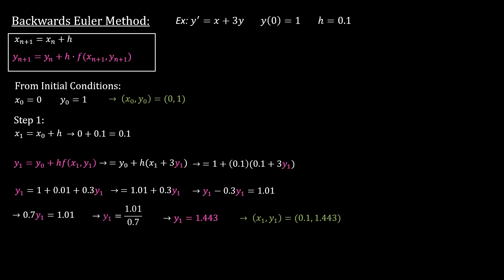For that one, the value we got for the regular Euler was 1.3, for the improved Euler it was 1.35, and for backwards Euler we're getting 1.443. You can see at least for this problem it was not as accurate.